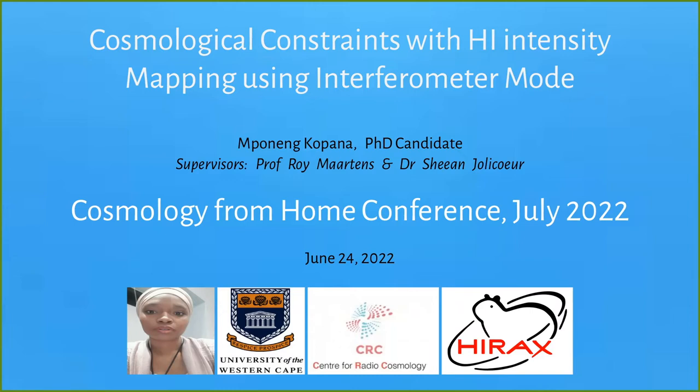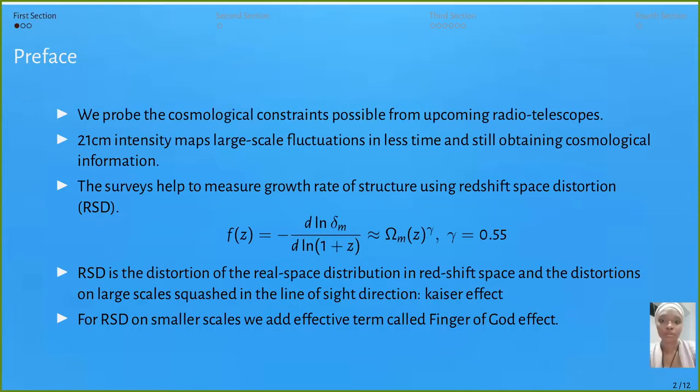Our work is on constraining cosmological information with H1 intensity mapping using radio telescopes in interferometer modes. Previous work constrained cosmological information using galaxy surveys. We are going to repeat the same thing, but now detecting H1 intensity mapping.